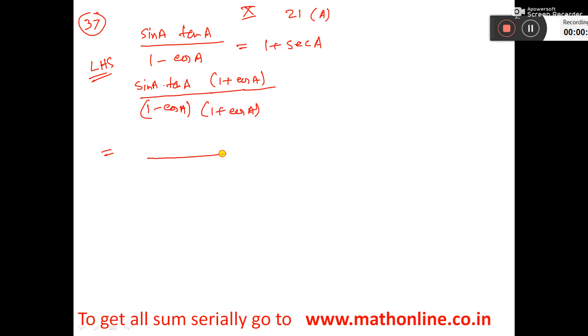So write it down: sine A into tan A, and here 1 plus cos A, here 1 minus cos A, 1 plus cos A, that is 1 minus cos²A.